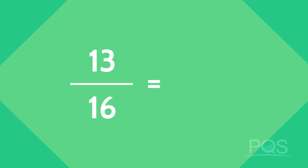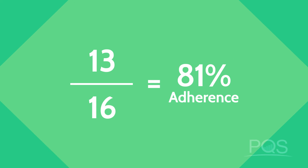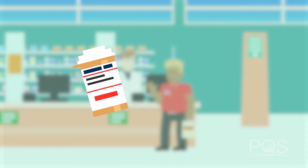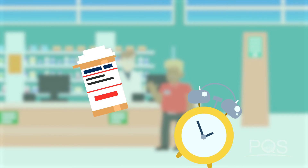13 divided by 16 equals an 81% medication adherence score for the sample population. Each patient you impact helps move you and your pharmacy forward, and you help the patient become healthier as they get the right medication at the right time. You worked smarter, not harder, and created a strategy to better serve your patients.